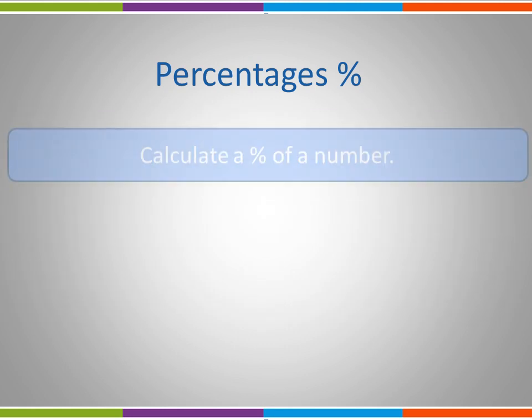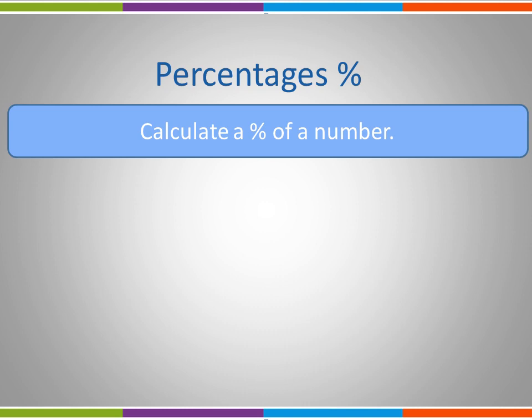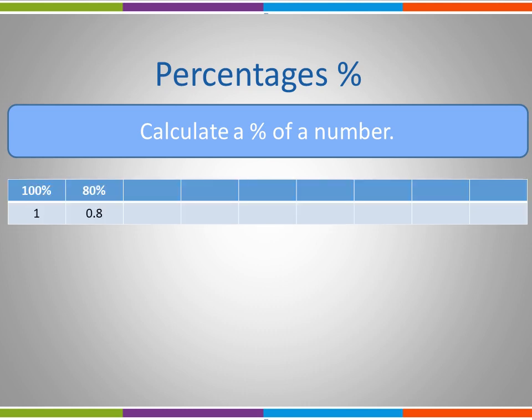Let's look at our second skill: how to calculate a percentage of a number. In order to do this, we're going to use a table to help us. 100% is the whole, therefore we express this as 1. If we want to calculate 80% of this, we want to know what is 0.8 of 1, therefore we would multiply it by 0.8. If we wanted to know what is 65% of the whole, we would multiply it by 0.65. So it's always 0. followed by the percentage. Why not pause the video whilst you fill in the rest of this table.